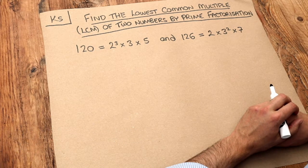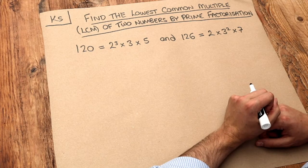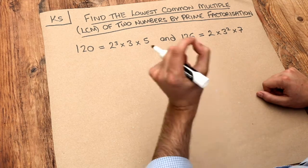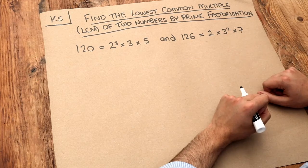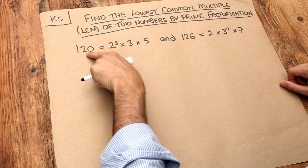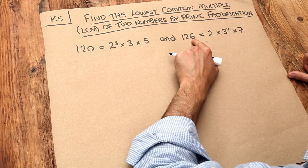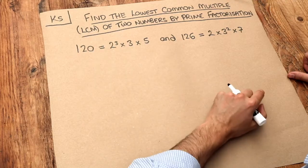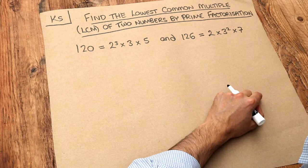Now in a previous video we saw how we could find the lowest common multiple of two numbers by just listing the multiples of the larger number until we saw a multiple of the smaller number. But this might be a problem if the numbers are quite large because I'm going to have to list lots of multiples of 126 until I see a multiple of 120.